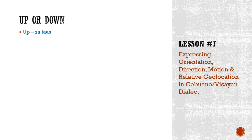There's a word spelled the same way yet with a different meaning, and the stress when you pronounce it is different. Taas means up. But if I say taas with different stress, that means long or tall. So: taas — up. Taas — long or tall.